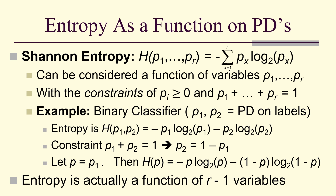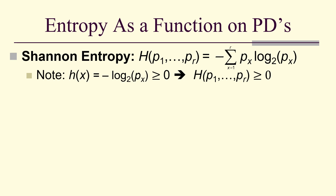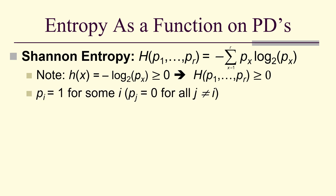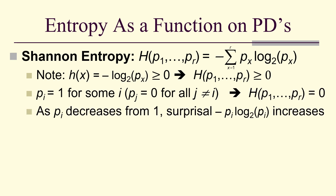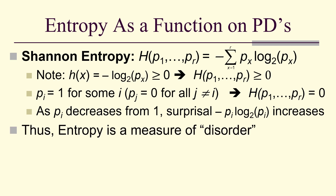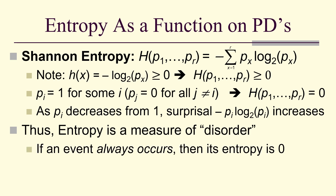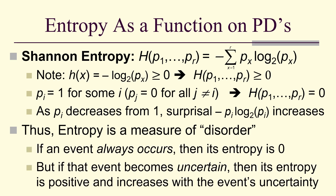Entropy is actually a function of r minus 1 variables, because we can eliminate one using the fact that they sum to 1. Notice that self-information is non-negative, so entropy is non-negative. If p sub i equals 1 for some i, all other p's are forced to 0, and entropy equals 0. As p sub i decreases from 1, the surprisal increases. So entropy is a measure of disorder: if an event always occurs, its entropy is 0, but as the event becomes more uncertain, entropy increases.